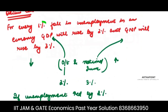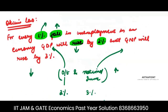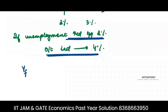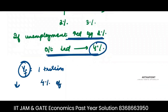Because according to Okun's law, unemployment and output move in opposite directions. When unemployment decreases by 1%, output increases by 2%. So when unemployment increases by 2% — doubling the change — output decreases by 4%. The full employment level of output is 1 trillion, so output decreases from full employment output by 4%, which is 4% of 1 trillion.